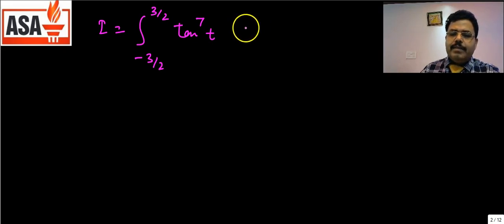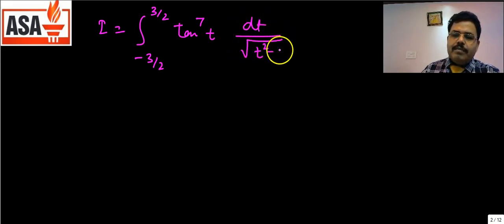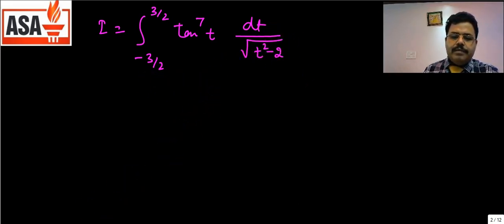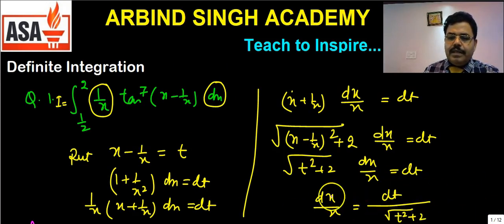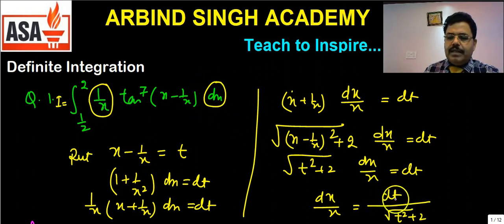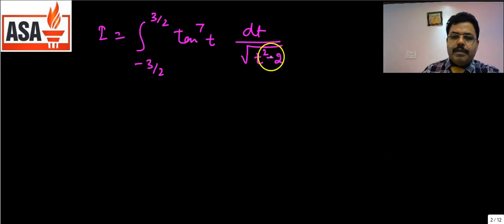In place of dx/x we write dt divided by √(t² + 2). So the full transformed integral is from −3/2 to 3/2 of tan⁷(t) · dt / (t² + 2). This is now in the pattern of −a to a.